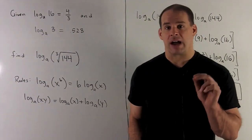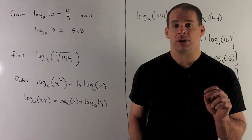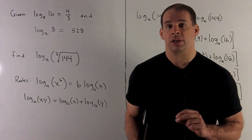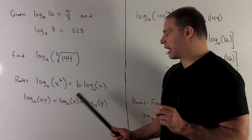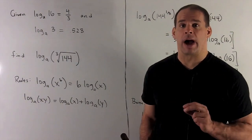Next, if I have the log of a product, I'm allowed to rewrite it as the sum of two logs. So I take the logarithm of x times y, that's just going to be the logarithm of x plus the logarithm of y.